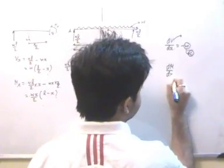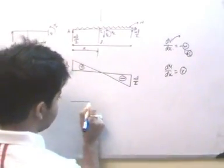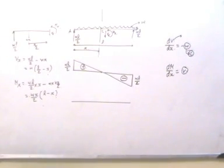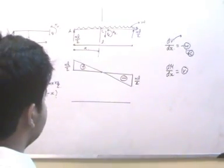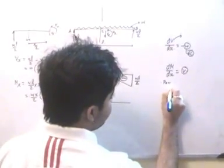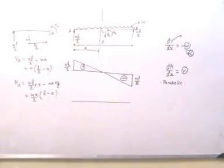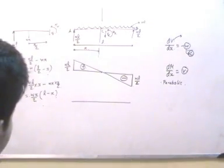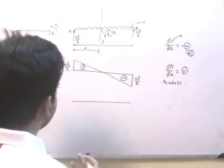We also know that dM/dx equals V — the slope of the bending moment diagram gives the shear force. Since the shear force is a linear function of X, the bending moment will be a parabolic function. From A to B we have a parabolic bending moment. Between A and C, the positive shear force is decreasing, meaning the slope of the bending moment diagram is also decreasing.